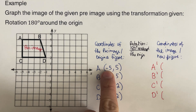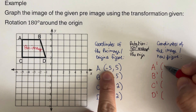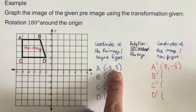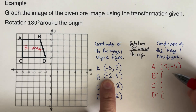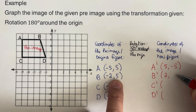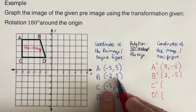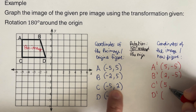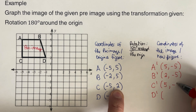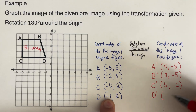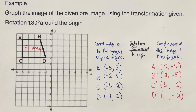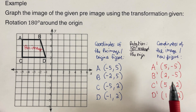Applying the rule: A at (-5, 5) becomes A prime at (5, -5). B at (-2, 5) becomes B prime at (2, -5). C at (-5, 2) becomes C prime at (5, -2). D at (-1, 2) becomes D prime at (1, -2). These are the coordinates of the image or new picture.